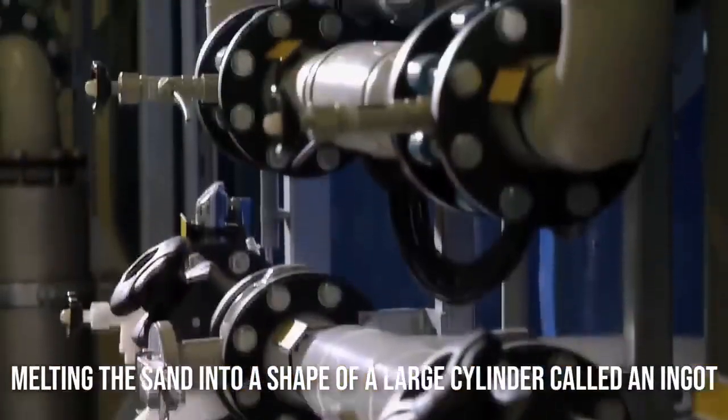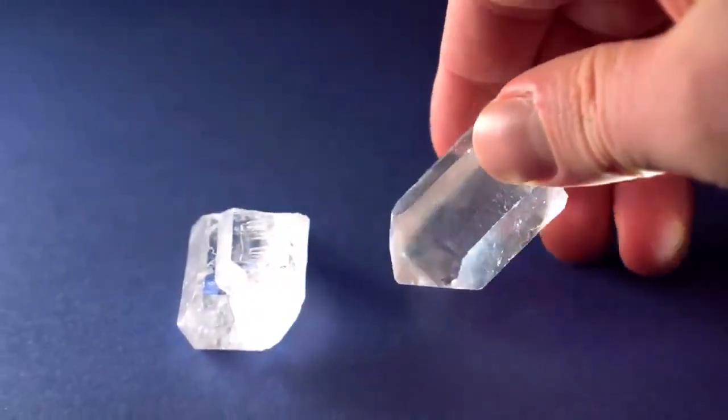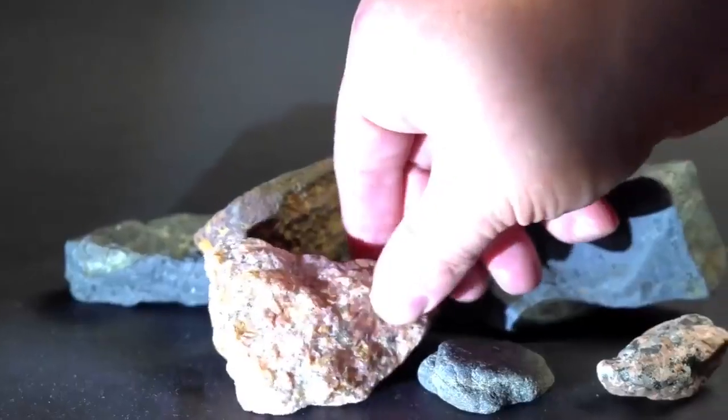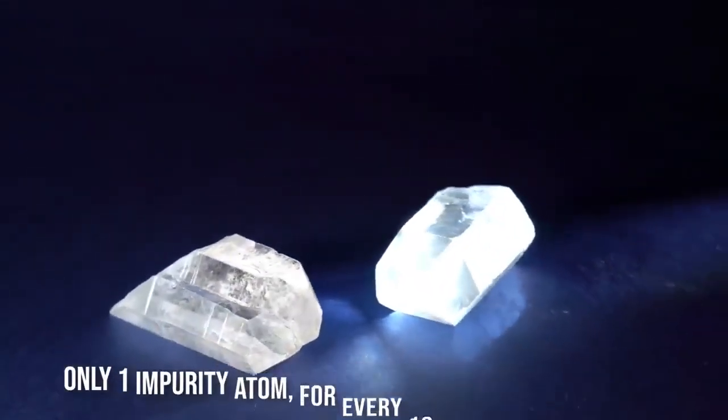The first step is melting the sand into a large cylinder called an ingot, from where thin wafers are sliced off. For microchips, good and pure silicon is always mandatory. Hence, only one impurity atom for every 10 million silicon atoms is allowed.